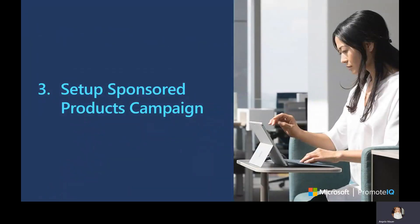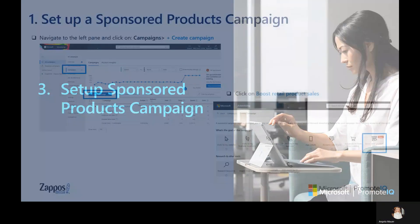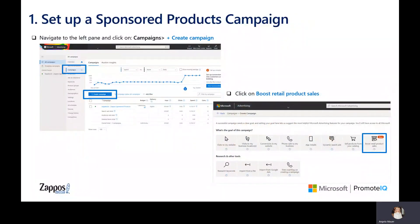All right, it's time to create your campaign. Start by navigating to the left pane and click on the Campaigns tab in the Microsoft UI. Then click Create Campaign and select Boost Retail Product Sales as the goal for this campaign.